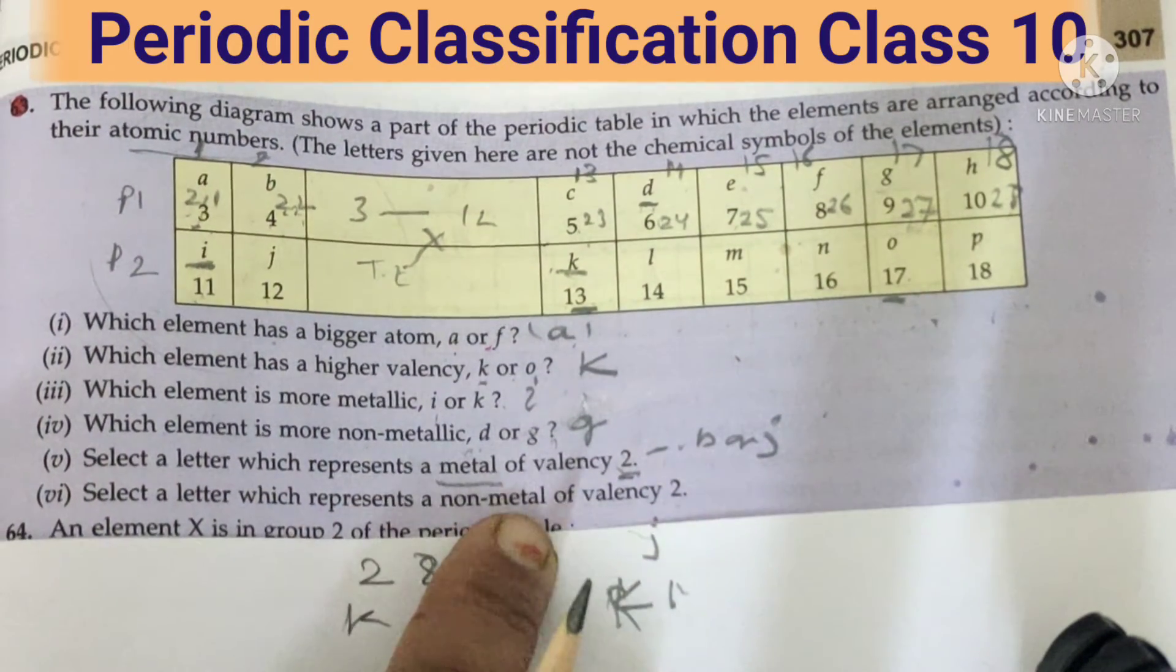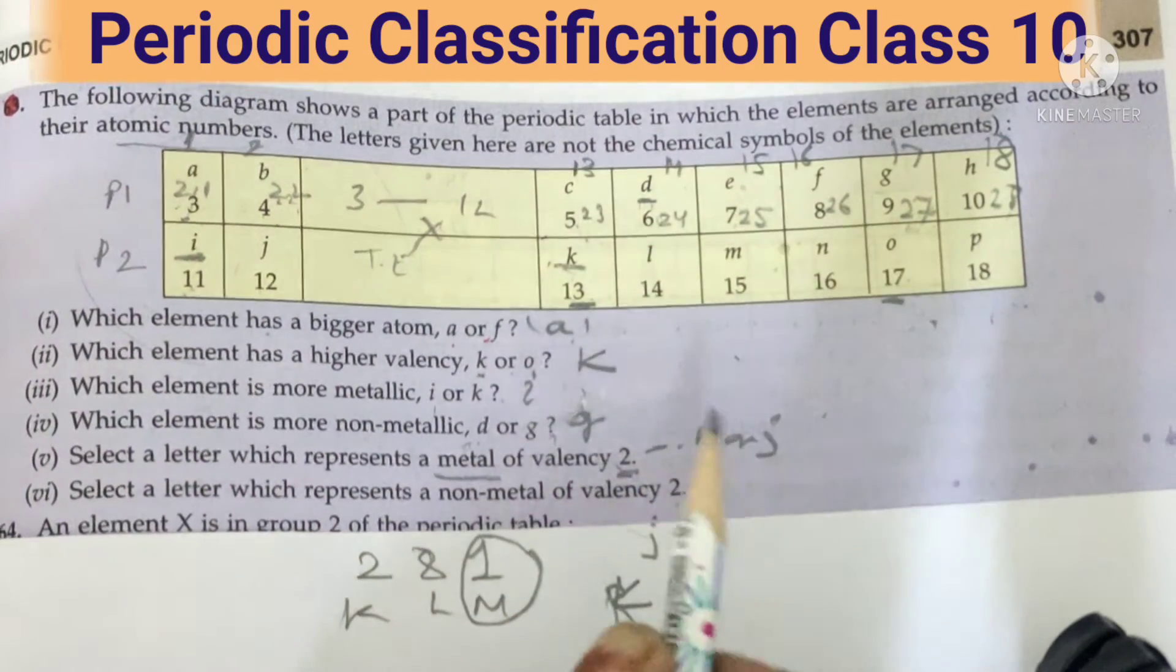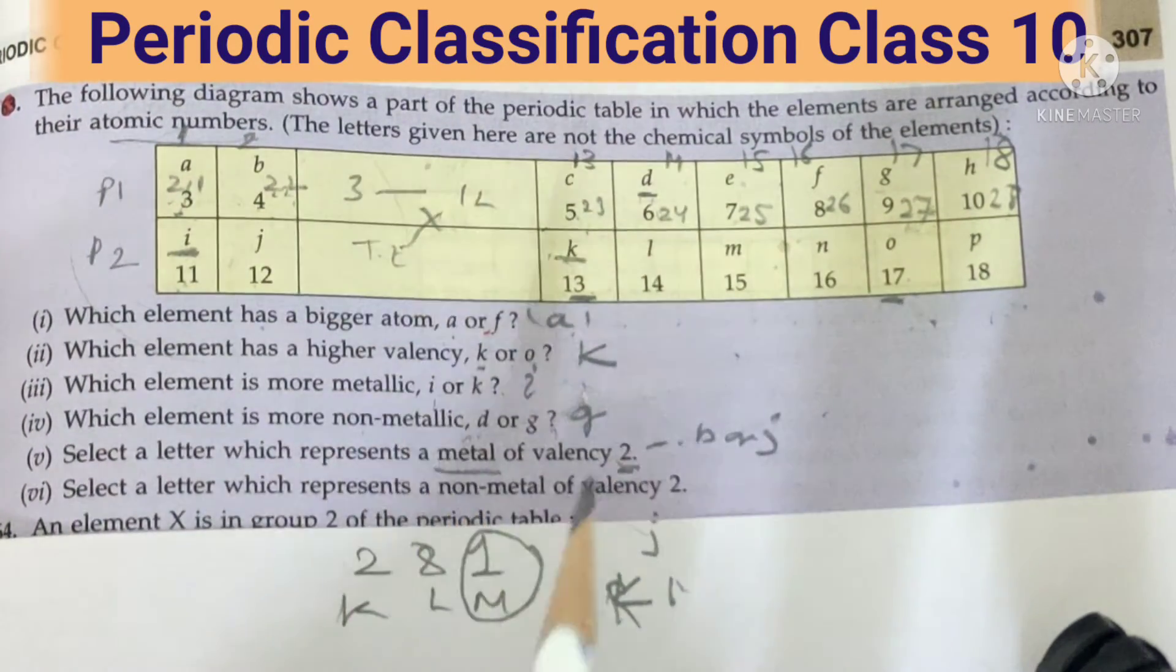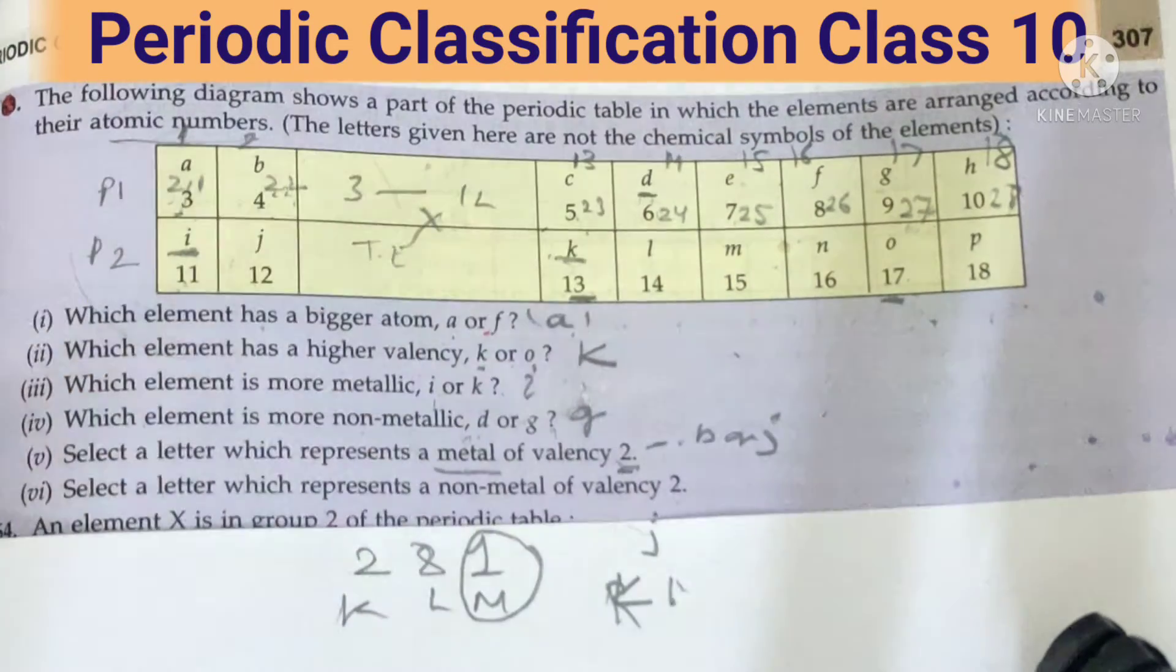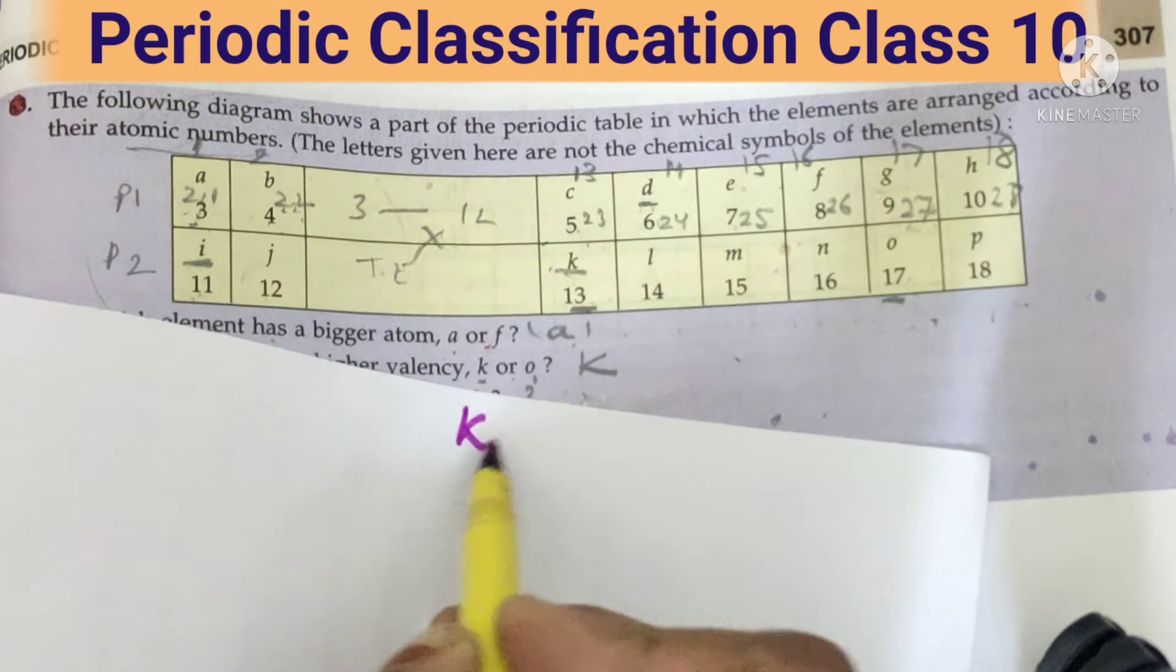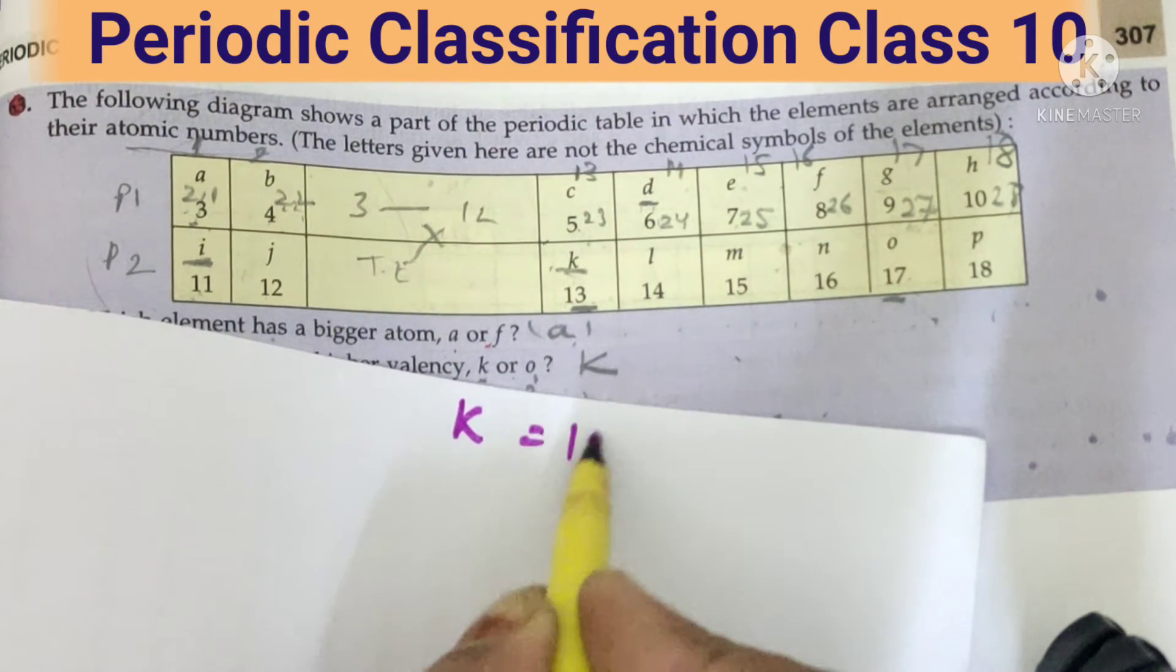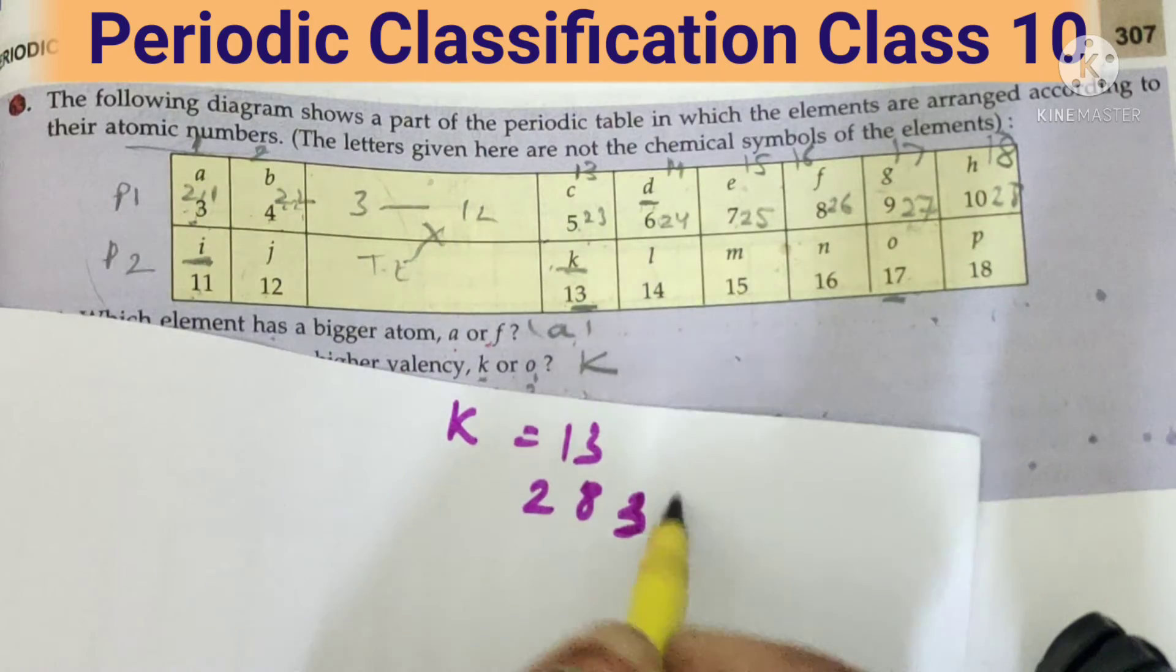Next. Which letter has non-metal valency two? Non-metal means this side. Valency two means they can accept two. Let's see. Let's start from here. K, it is thirteen, so two eight three, it will donate three. Come to L, L is two eight four, that means it can donate or accept four. This is not it.